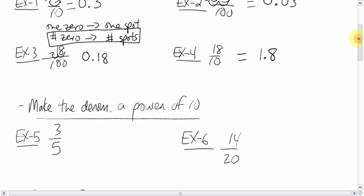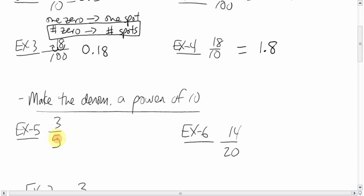What if, though, the denominator is not a power of ten? Well, if you can, try to make it a power of ten. How can you make 5 into 10? Well, you times it by 2. And remember, from fractions, whatever you do to the bottom, you've got to do to the top. So now, this fraction of 3/5 has become 6/10, which we can use our number of zeros equals number of spots trick. One zero, one spot, gives us 0.6.